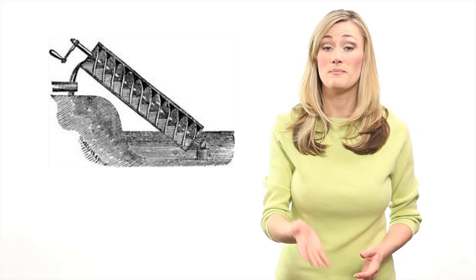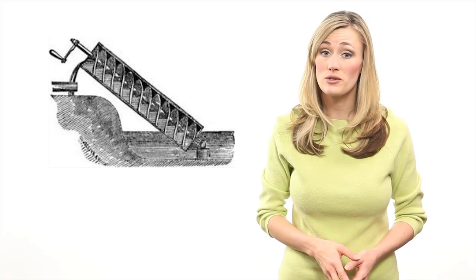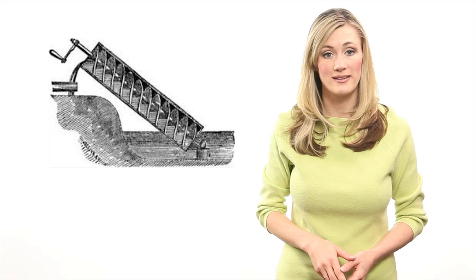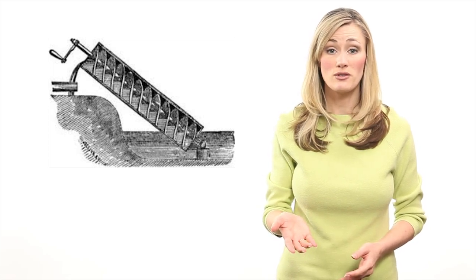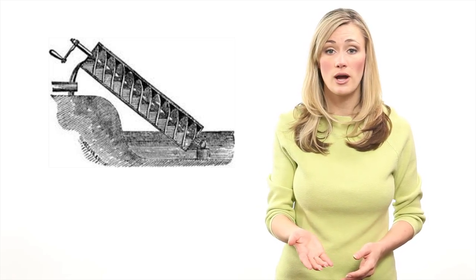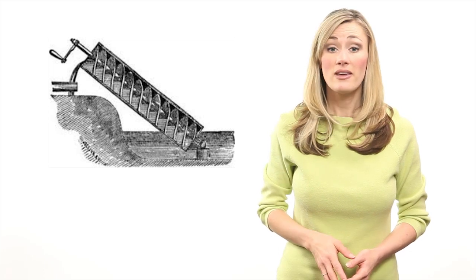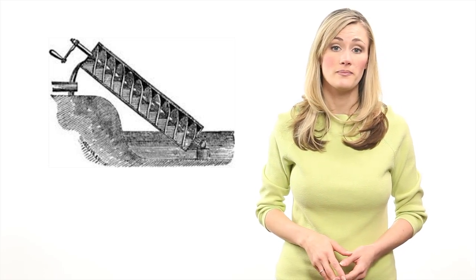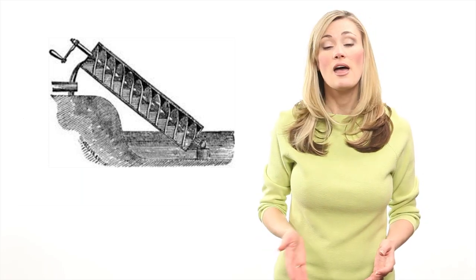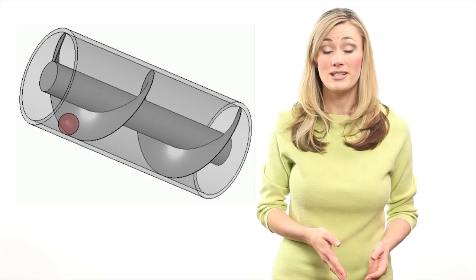An Archimedes screw has many uses, but was most commonly used throughout history to move water uphill. As someone turned the crank manually, the screw blades force water upwards along the threading and thereby transport water uphill. Once the water reaches the top, the screw design releases the water into a trough.